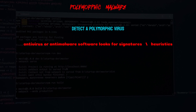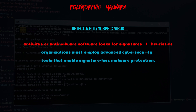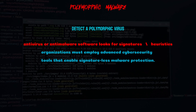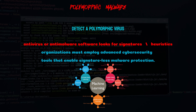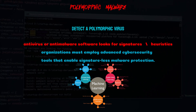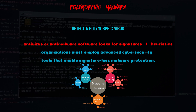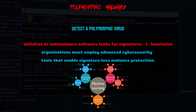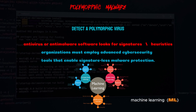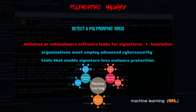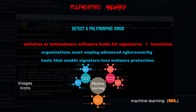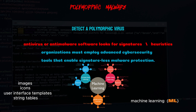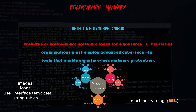To detect polymorphic viruses, organizations must employ advanced cybersecurity tools that enable signature-less malware protection. Signature-less malware protection uses machine learning algorithms to determine the likelihood that a file is malicious by analyzing the broader picture and extracting features from the files analyzed. These are high-level characteristics that numerically describe the structure of the file. For example, the ML model can look at the amount of randomness in various areas of the file, as well as images, icons, user interface templates, or string tables. The tool can also dissect and describe the code in a numerical fashion so that it can be fed into a machine learning classifier.